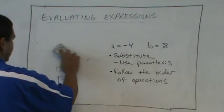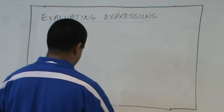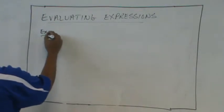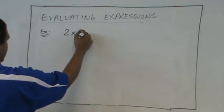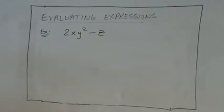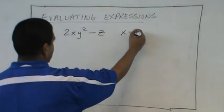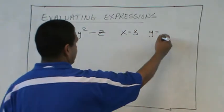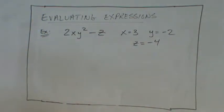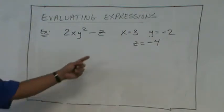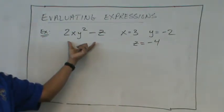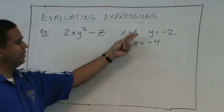Well, let's try one with maybe an exponent in it. Let's go with an example. What if we have 2xy squared minus z? So we have 2xy squared minus z. We're going to let x equal 3, y is negative 2, and z is negative 4. So we're going to let x equal 3, y equal negative 2, z equals negative 4. And here's our expression that we want to evaluate. So I want to find the value of this thing when x is 3, y is negative 2, z is negative 4.